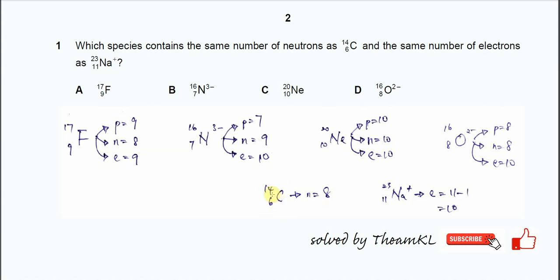Proton number for carbon is 6. Nucleon number is 14. 14 minus 6, so the neutron number is 8.